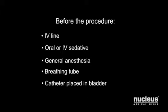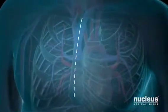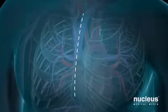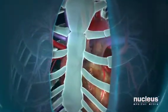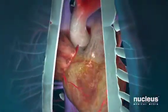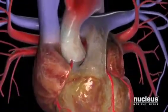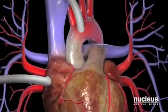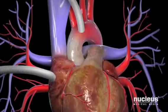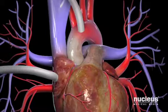Coronary artery bypass surgery generally takes three to six hours. During a conventional bypass surgery, your surgeon begins by making an incision in the skin over your breastbone, or sternum. He or she will then cut the sternum and move your ribcage in order to get to your heart. Throughout the procedure, your circulatory system may be connected to a cardiopulmonary bypass pump, or heart-lung machine. This machine may temporarily perform the functions of your heart and lungs during the surgery, allowing your heart to be stopped if desired, while the surgeon sews the grafts into place.